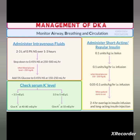Hourly blood glucose levels are checked and the insulin dose is adjusted accordingly. Intermittent insulin may also be given. The main priority in DKA management is IV fluids first, followed by insulin titrated to the patient's weight and glucose response.